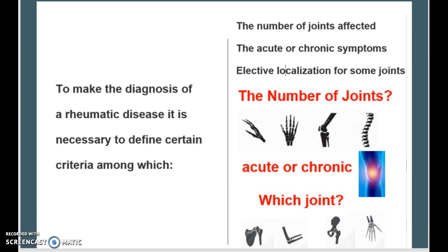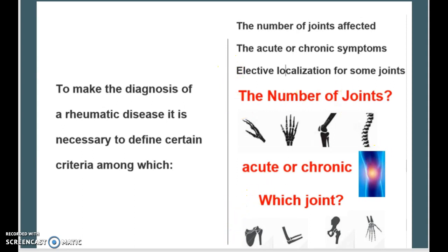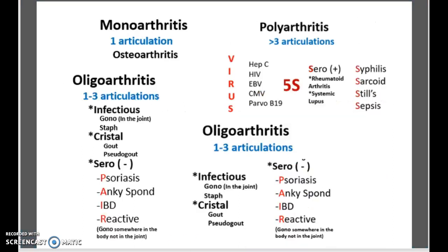To make a diagnosis of a rheumatic disease, it's actually really necessary to define certain criteria, such as the number of joints affected, whether the symptoms are acute or chronic, or elective localization of some joints — so basically what joints are affected and which areas. This chart will show you which type of arthritis you're dealing with.